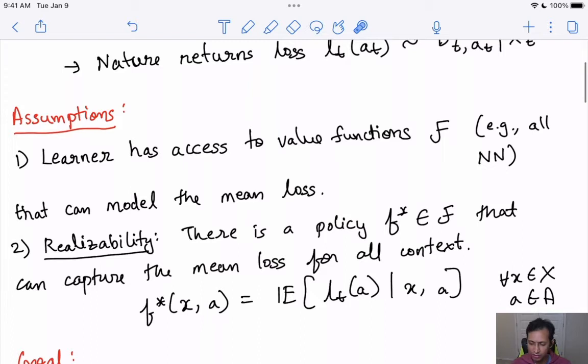The second thing we assume is realizability. This means that there's a policy f* within this function class F that can exactly model the mean loss for every context. In particular, for every context x and action a, the function f*(x,a) is exactly coinciding with the expected loss of a given x,a. This may seem like a strong assumption, but in practice this just means that you have a function f* within F that is actually a very good model for all the realized sequences that you see. Even though for proving theory the paper assumes this needs to be exact, for most practical applications as long as f* is good enough this is something you may want to try.